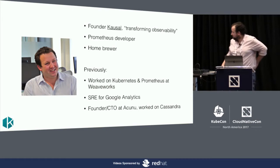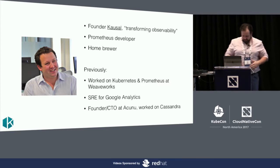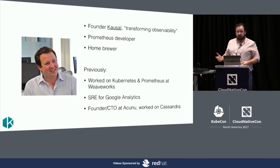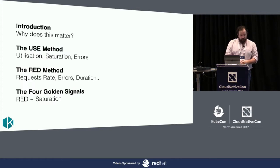My name's Tom. I started a company called Causal recently — we do a hosted version of Prometheus basically. I also make my own beer, which kind of explains the barbecue for lunch. Used to work for a company called Weaveworks, who are also here and do a lot of work on Prometheus. Before that, I was at Google for a few years, and before that, another startup.